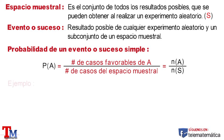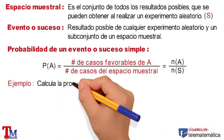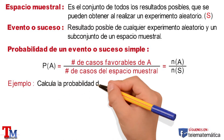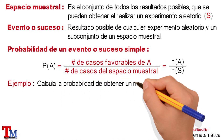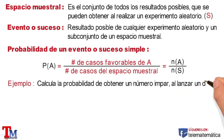Let's see an example. Calculate the probability of getting an odd number when launching a die.